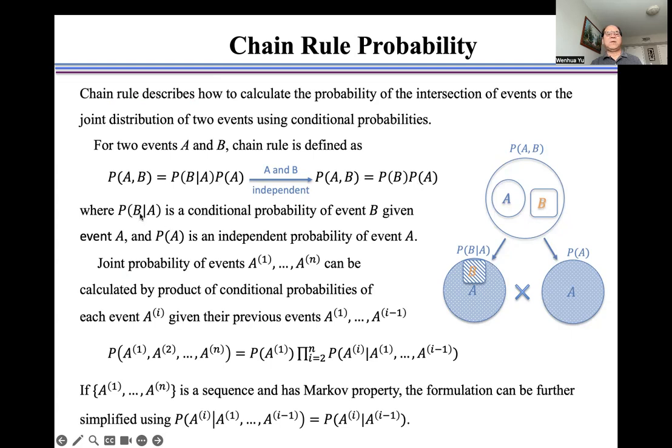Where P(B|A) is a conditional probability of event B given event A, and P(A) is an independent probability of event A.